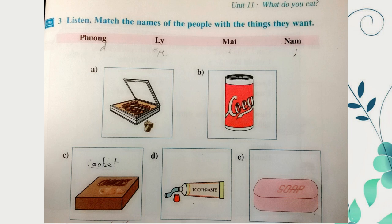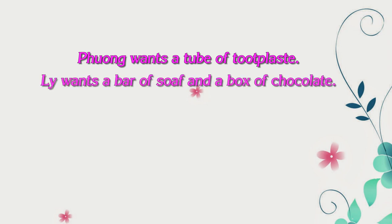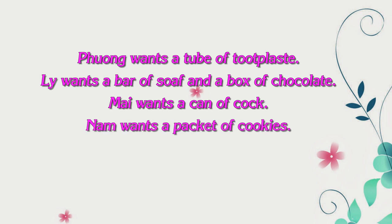3. Listen. Match the names of the people with the things they want. Fung wants a tube of toothpaste. Fung wants a bar of soap and a box of chocolates. My wants a can of Coke. Numb wants a packet of cookies.